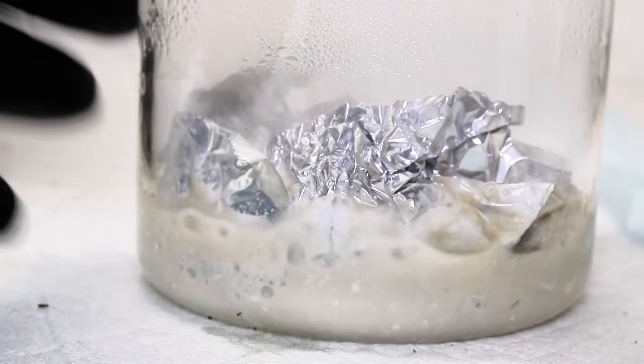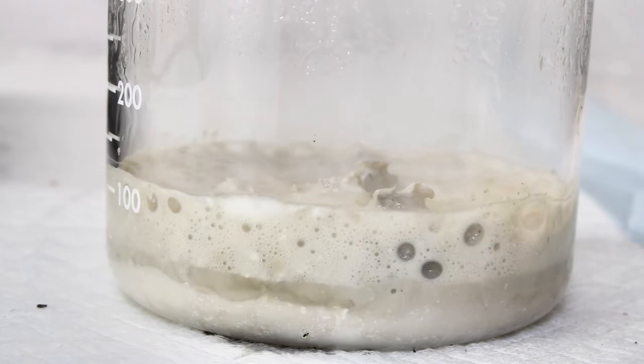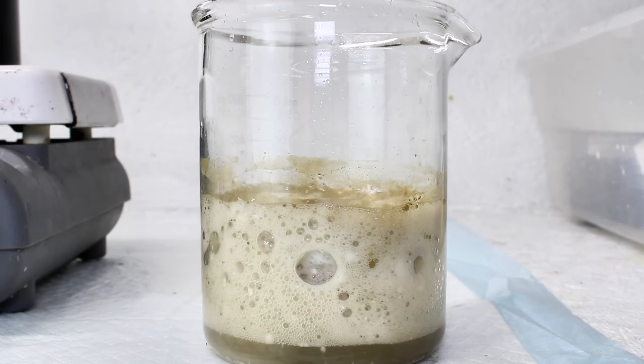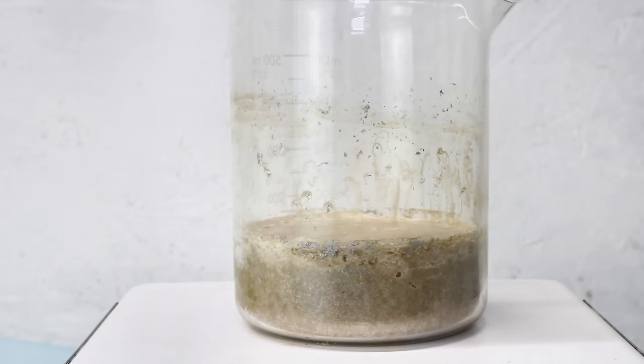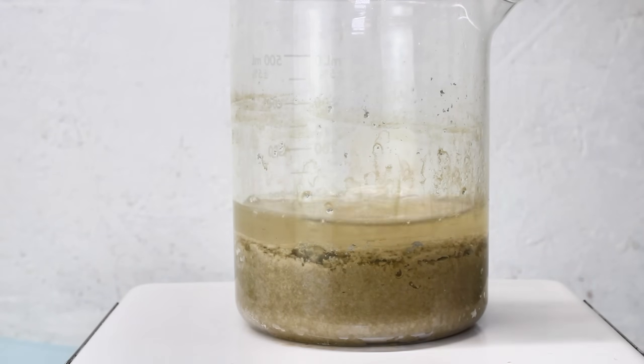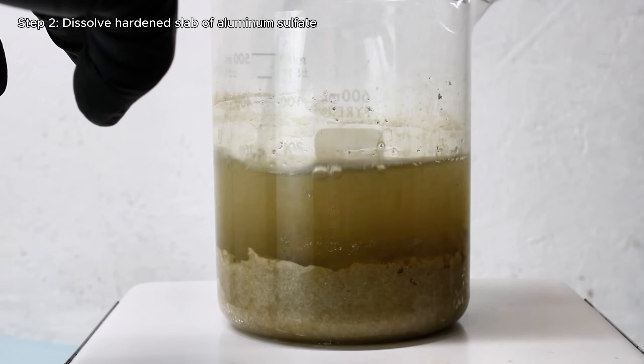To get started with method number two, I simply added some concentrated sulfuric acid to a beaker along with some aluminum foil. Sulfuric acid won't begin to dissolve the metal until a bit of water is added, but the second water is added, the two react very very aggressively. This produces a lot more foaming than the hydroxide did, as well as a lot of brown discoloration. I went ahead and kept adding water and aluminum foil until no more would dissolve and then left it overnight.